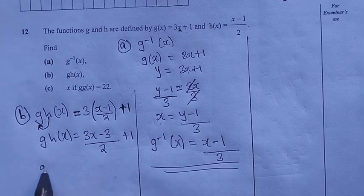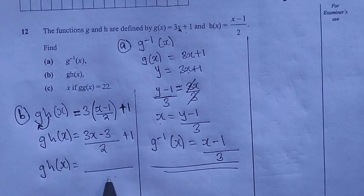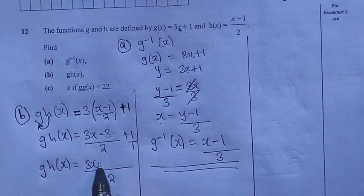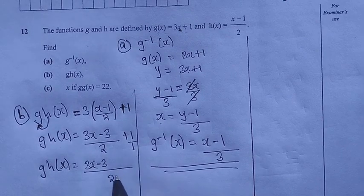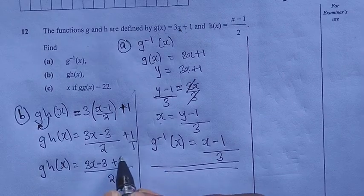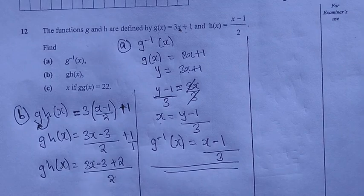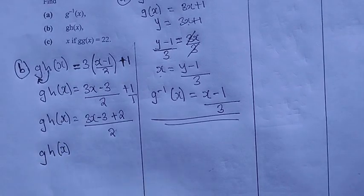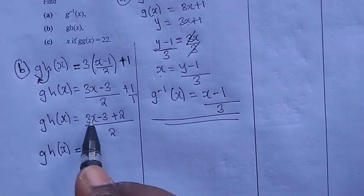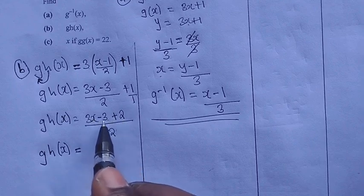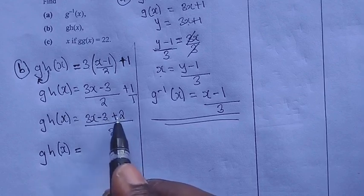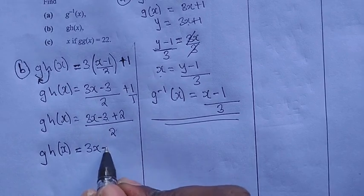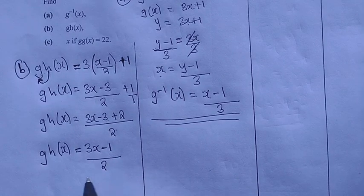From here, g(h(x)) = 3x/2 - 3/2 + 1. The common denominator is 2. So we have (3x - 3)/2 + 2/2, which gives g(h(x)) = (3x - 3 + 2) / 2. Simplifying -3 + 2 gives -1, so g(h(x)) = (3x - 1) / 2. This is our answer.